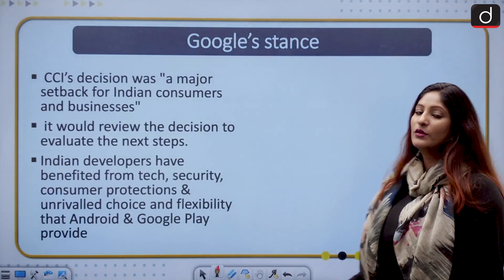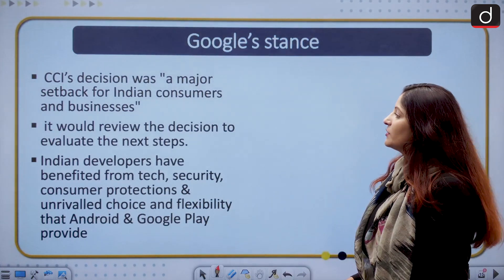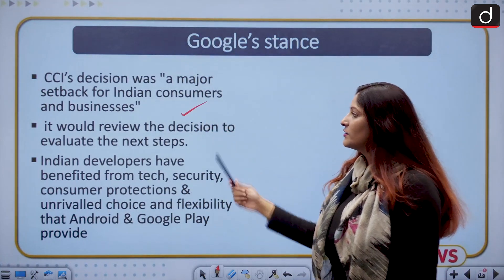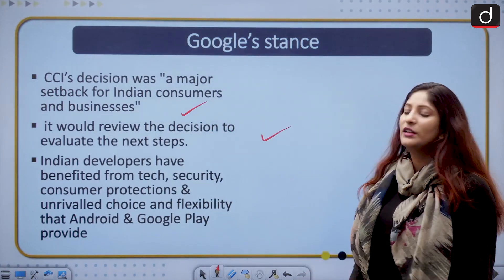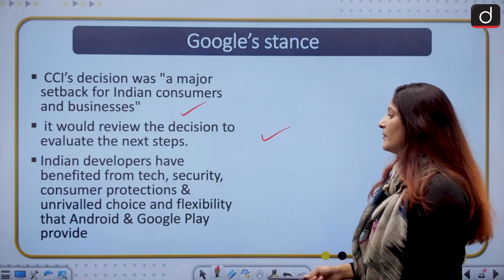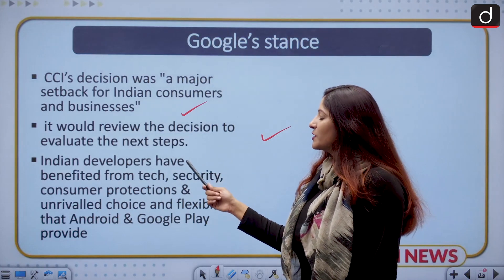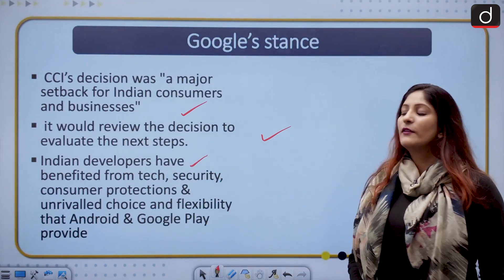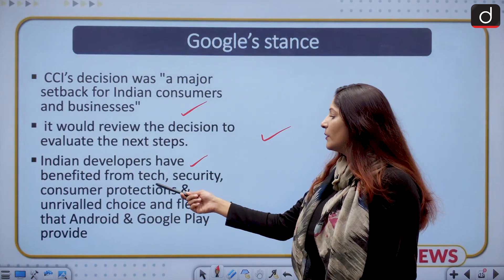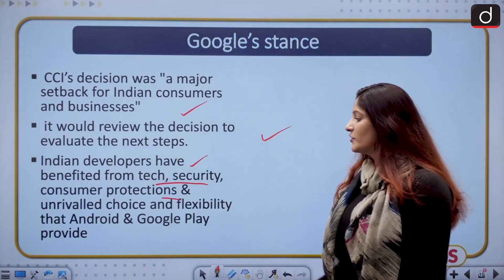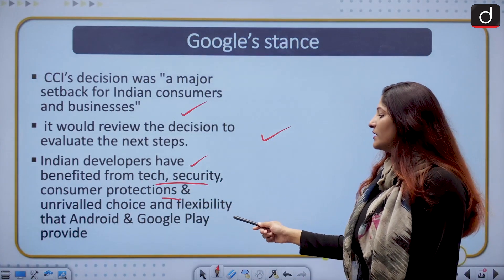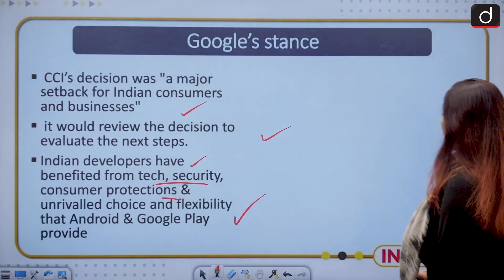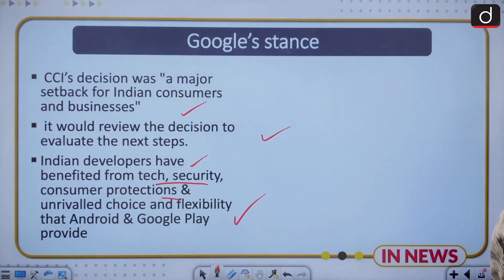Moving ahead, let us talk about Google's stance. According to Google, the CCI decision was a major setback for Indian consumers and businesses, and Google said it would review the decision before taking the next step. Google's spokesperson also said that Indian developers have benefited from the market created by Google through tech security, consumer protection, and the unrivaled choice and flexibility that Google Play and Android support.